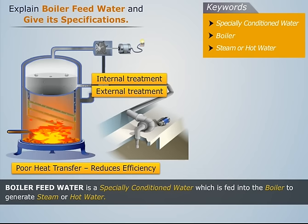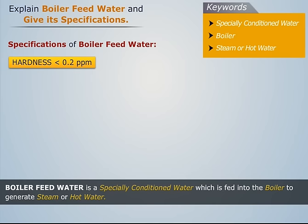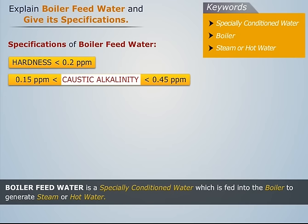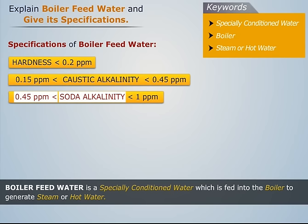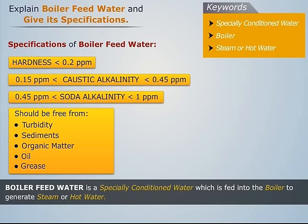Let us now discuss the specifications of boiler feed water. Before using the boiler feed water in the boiler, it should be ensured that it meets the following specifications: its hardness should be below 0.2 parts per million; its caustic alkalinity should be between 0.15 and 0.45 parts per million; its soda alkalinity should be between 0.45 and 1 parts per million; it should be free from turbidity and sediments; and it should be free from organic matter, oil, and grease to avoid foaming.